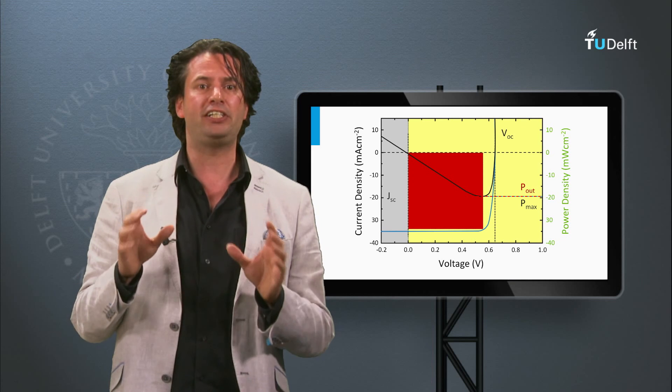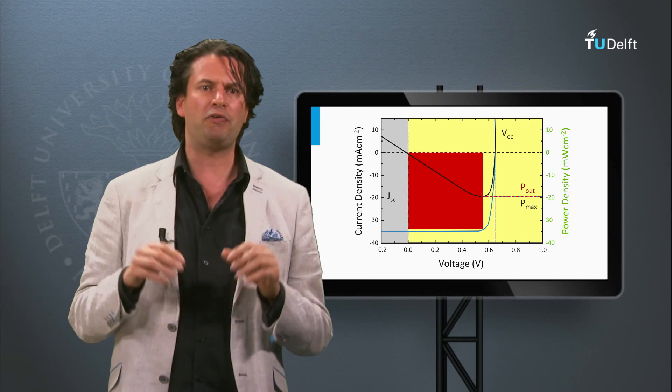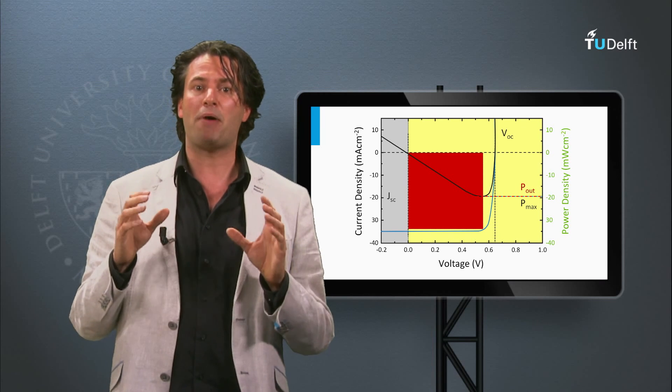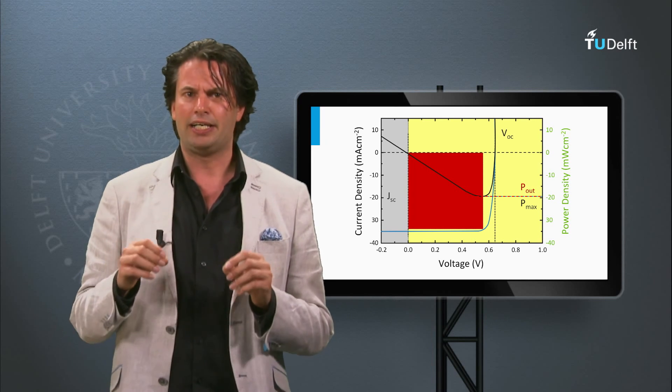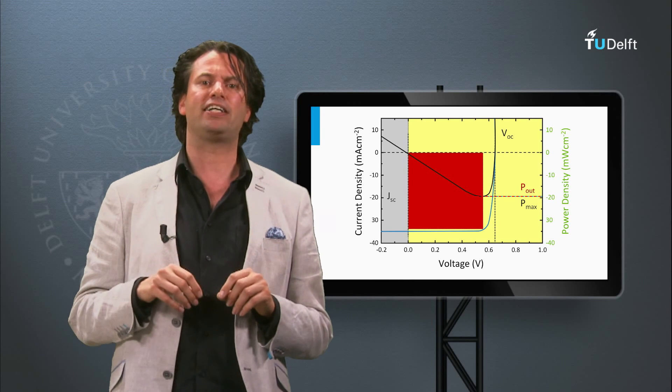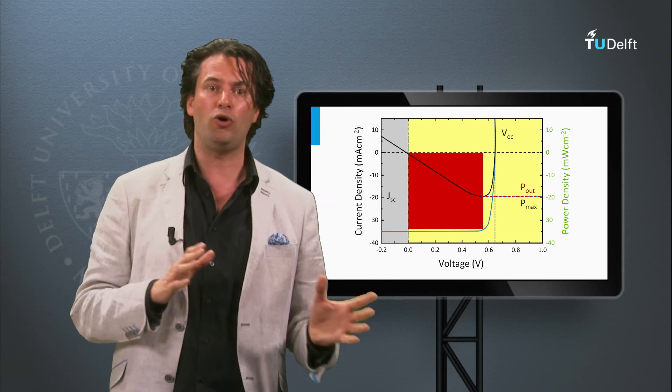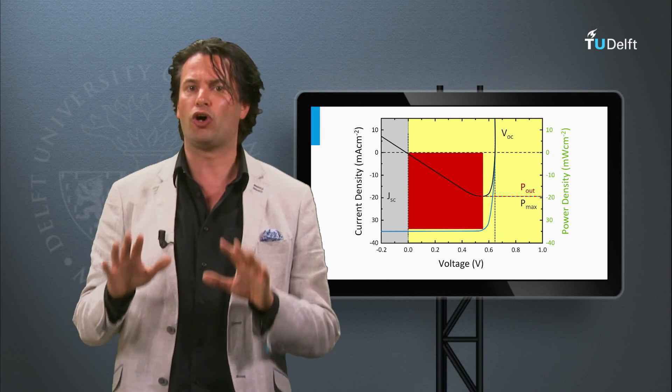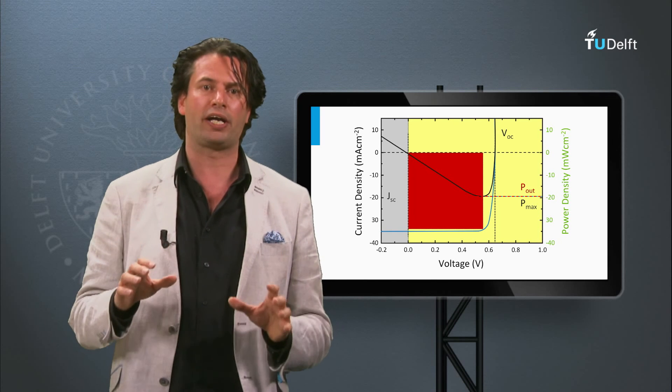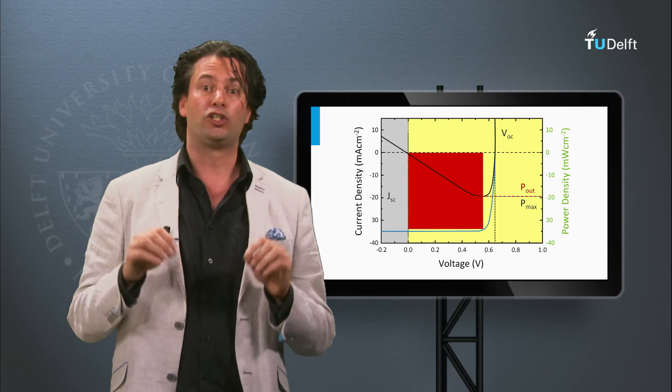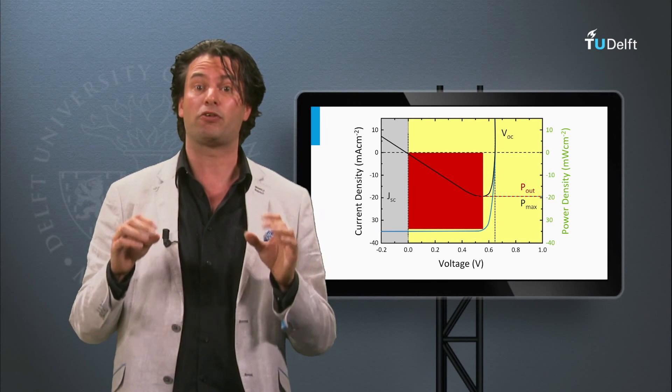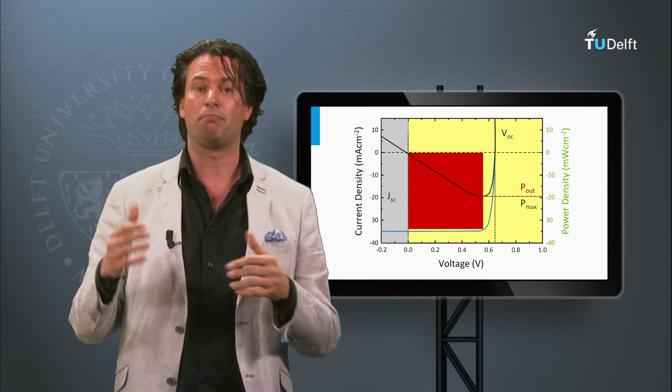If we discuss PV systems later in this course, we will talk about maximum power point trackers. These are electronic devices which varies the load in time, such that the solar panel is always working in its maximum power point, such that the maximum amount of electrical power can be generated by the solar panel.